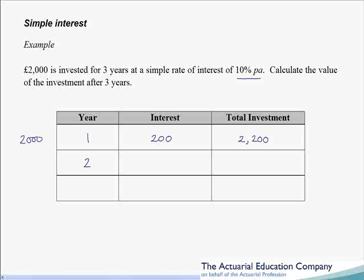In year two we still have our interest of 10% per annum. But remember we don't earn interest on the interest, so we don't do 10% of the total investment — we still do 10% of the original £2000. So once again interest will be £200 and our total investment will now be £2400.